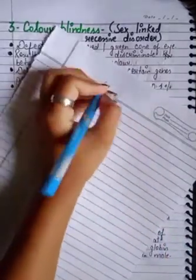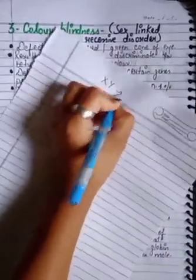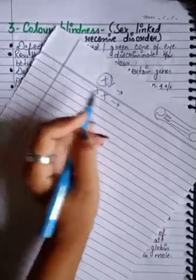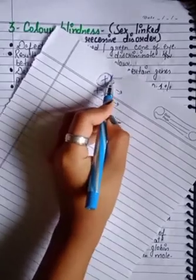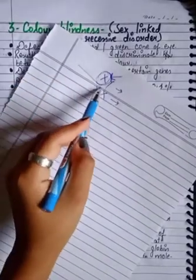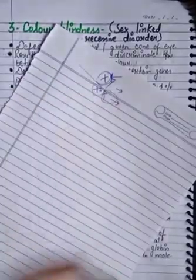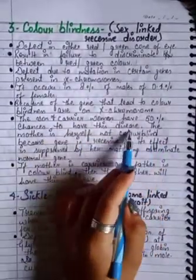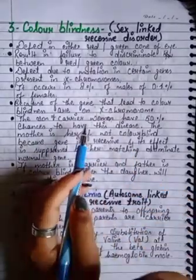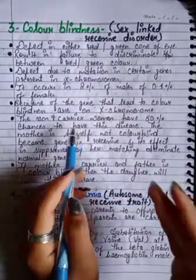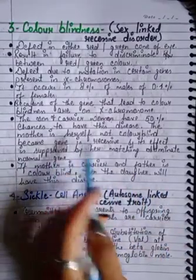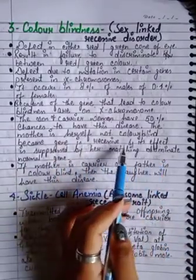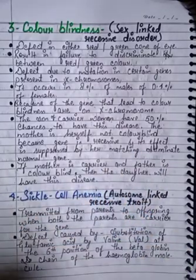Males are XY and females are XX. In males, if the X chromosome carries the mutation, there is no second X to compensate — hence higher chance of colorblindness. Sons of a carrier woman have a 50% chance of having this disease. The carrier mother herself is not colorblind because the gene is recessive and its effect is suppressed by her matching dominant normal gene.